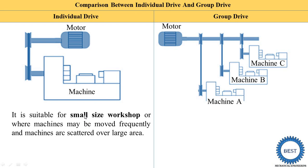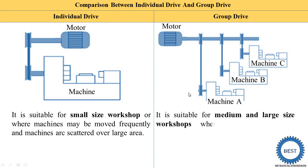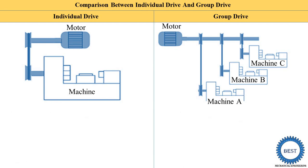Third condition: where machines are scattered over a larger area with fewer machines, individual drive is used. For a group drive, it is suitable for medium and large size workshops where machines are not scattered over a larger area. In a medium and large size workshop, the number of machines is more and they are not scattered, so group drive is used.